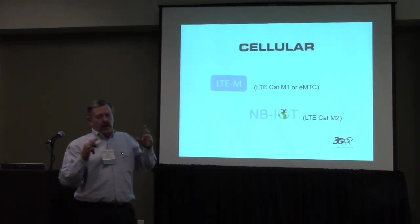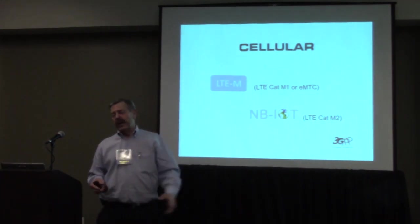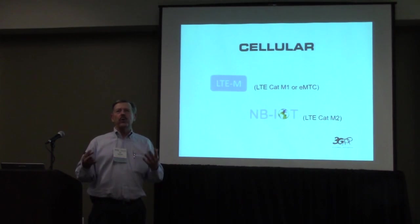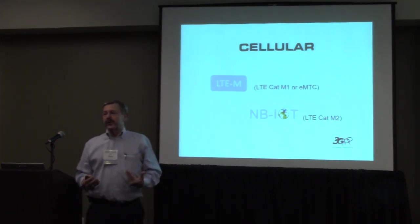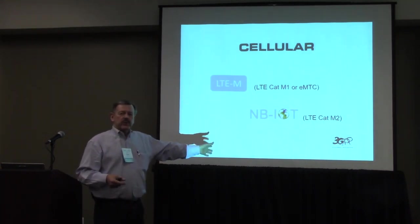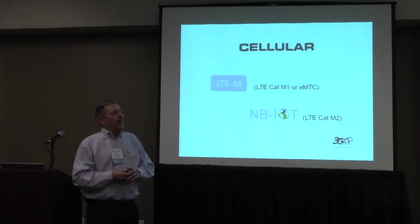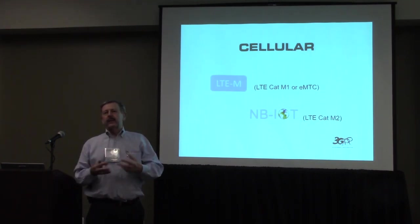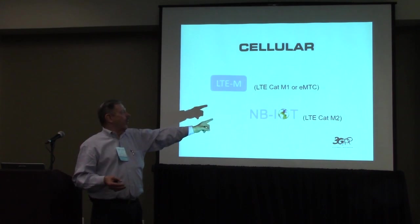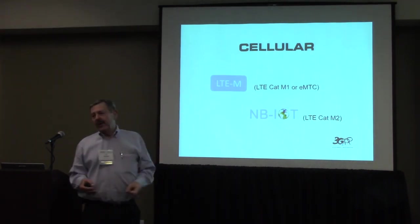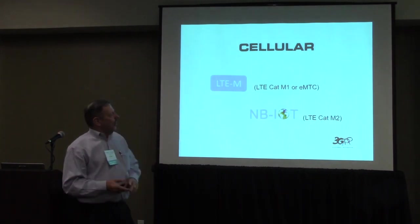The cellular guys — 3GPP is their standards group — want to find a solution for IoT, but their focus has been smartphones. They've had to create new networks and technologies for high bandwidth requirements, and they don't want to lose their customer base. They have at least five standards for IoT or low-power technologies. The two that will probably get the most traction are LTE-M, also called LTE-CAT-M1 or eMTC, and Narrowband IoT, also called LTE-CAT-M2.